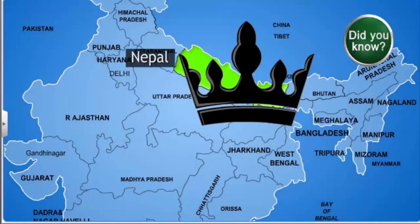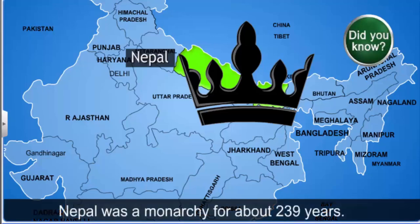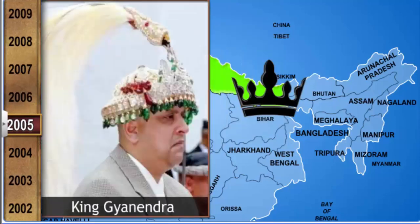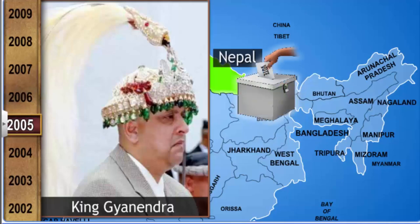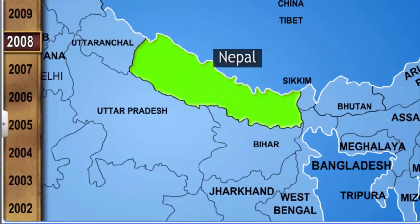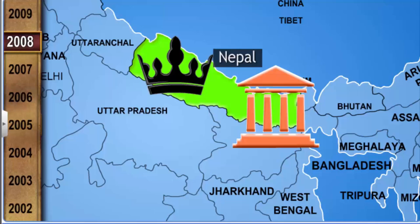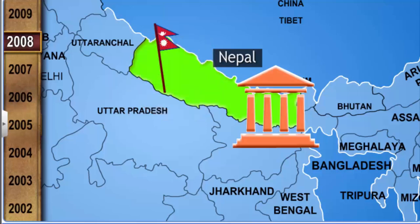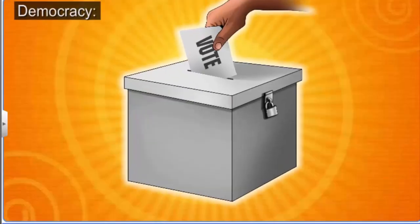India's neighbor Nepal was also a monarchy for about 239 years. In 2005, King Gyanendra took complete control of the government, dismissing the elected parliament. Following opposition to his direct rule, he was peacefully deposed in 2008, and Nepal's newly elected constituent assembly abolished the monarchy after the elections in April 2008. Nepal is now a federal republic.